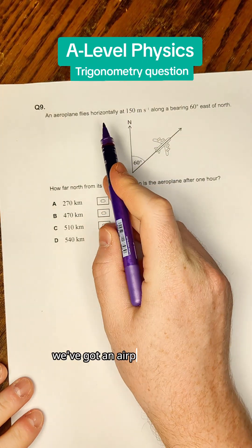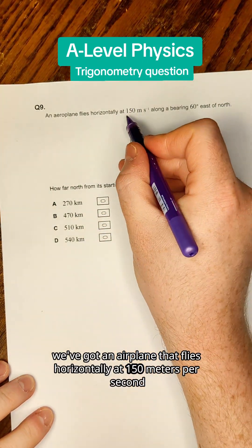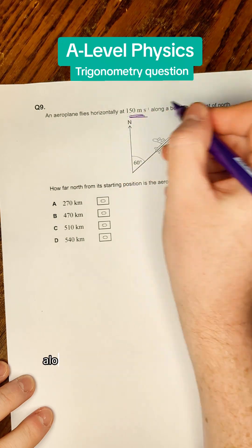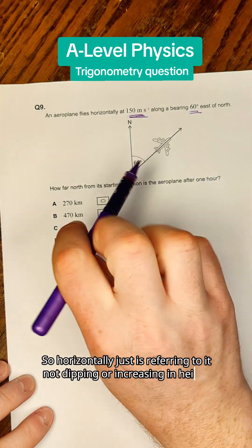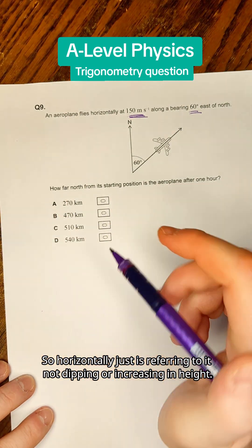In this year 12 mechanics question, we've got an airplane that flies horizontally at 150 meters per second along a bearing 60 degrees east of north.